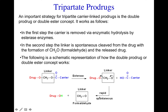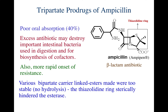This schematic is a representation of how the double prodrug or double ester concept works - this is a good longer-type exam question on tripartite prodrugs. As an example, ampicillin is a beta-lactam antibiotic with very poor oral absorption of only 40%, and excess antibiotic may destroy important intestinal bacteria used in digestion and biosynthesis of cofactors.